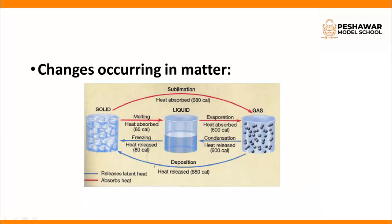Next are changes occurring in matter. When we freeze liquid water to 0°C it changes to solid ice. Increasing the temperature changes it back to liquid, and at 100°C the water evaporates into steam. The state of matter changes by increasing or decreasing temperature. If you have any questions, you can comment below.